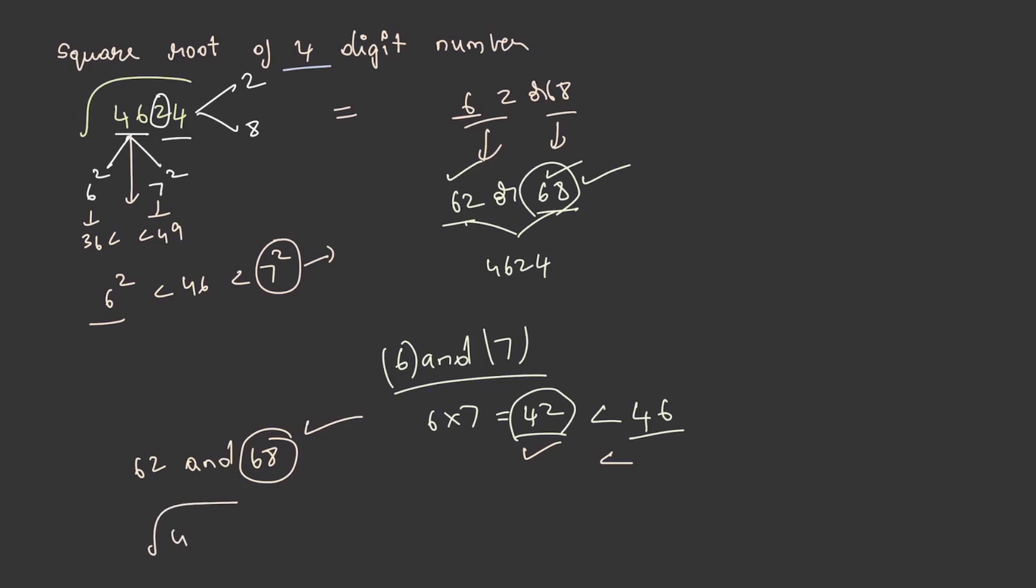So, square root of 4624 is equal to 68. This is how you find out the square root of a 4-digit number.